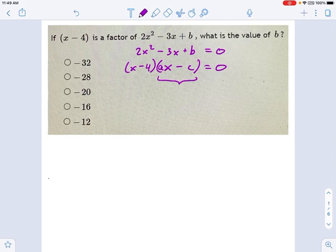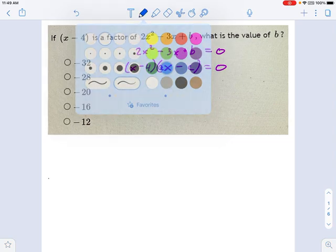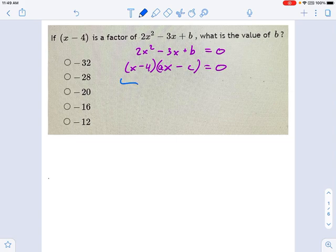Now, I have no idea what ax minus c is. No clue. But what we should be familiar with doing from solving equations is saying, hey, this means x equals 4, and this one means x equals c over a. These are two solutions to our equation.